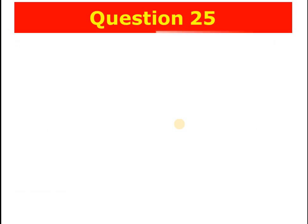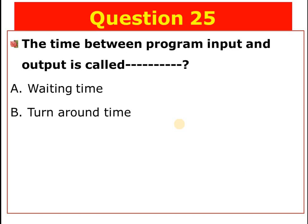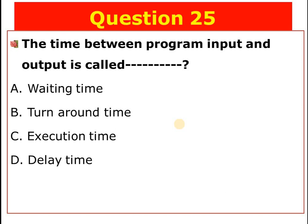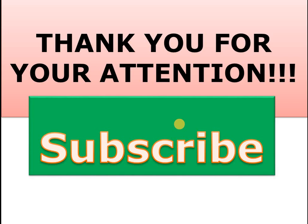Question number twenty-five, the last question: The time between program input and output is called blank. A) Waiting time, B) Turnaround time, C) Execution time, D) Delay time. The answer is B — turnaround time. Thank you for your attention. Please subscribe to my channel for more videos related to computer and mobile technology.